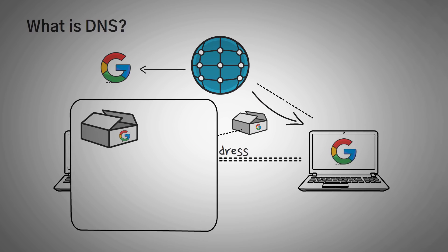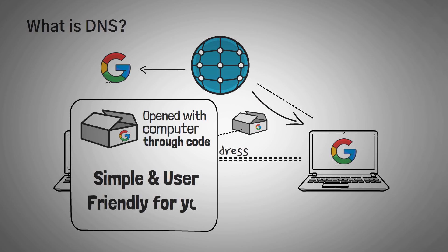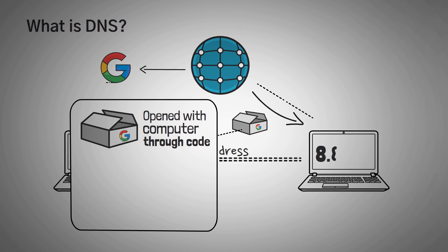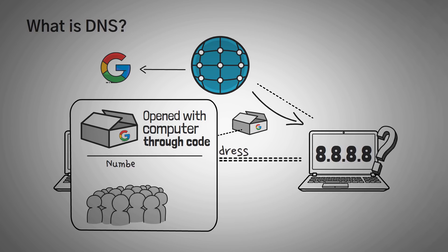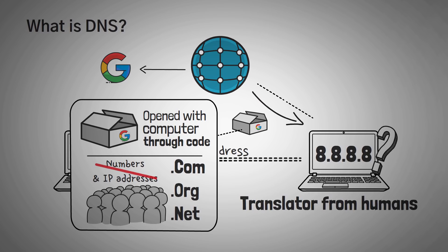The package is then unpacked by your computer to show you the entirety of the google.com homepage. Using complicated math and software, all of this communication happens behind the scenes, but to you it's simple and user-friendly. In fact, if we had to type in 8.8.8.8 into the URL bar instead of google.com, a lot more people would be confused. We don't speak in numbers or IP addresses — we speak in .coms, .orgs, and .nets, because it makes sense to us. So that's essentially what DNS is: a translator for humans to speak machine code.